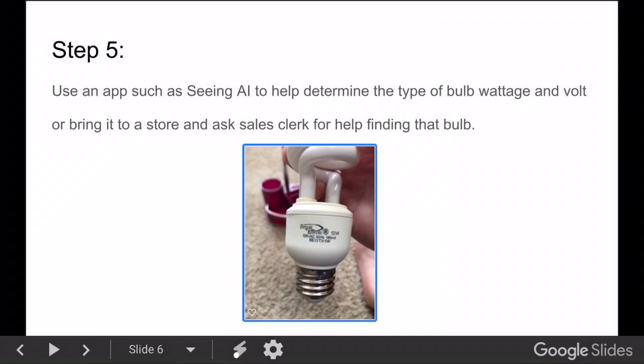Step 5, use an app such as Seeing AI to help determine the type of bulb wattage and volt or bring it to the store and ask a sales clerk to help find that bulb.